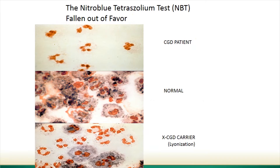To diagnose CGD, cells are taken from blood and exposed to a dye and a stimulant. When those neutrophils get stimulated and produce superoxide, they change color. In a normal person, the neutrophils change color; in a CGD patient, there is no color change because no superoxide is being made. In a female carrier, you see two populations — neutrophils that change color and ones that don't.